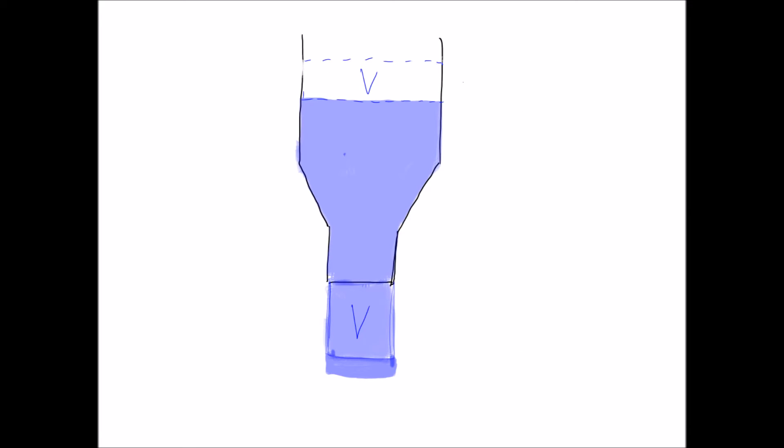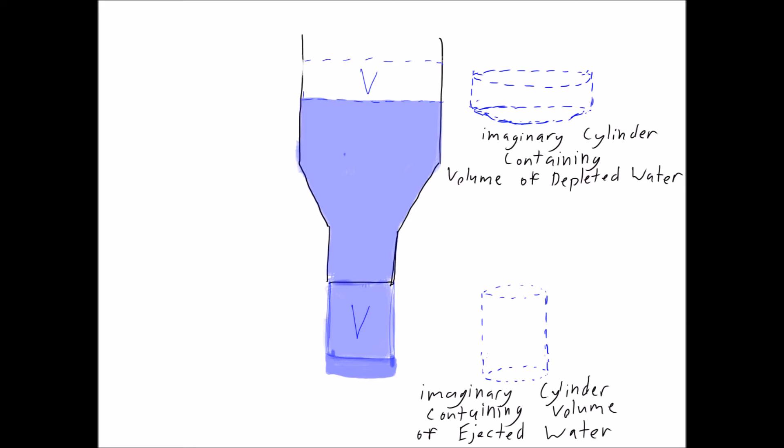Imagine now that the water is pushed out of the pipe. We expect the volume of water that flows out to be equal to the amount of water that's missing from the tank. Imagine the volume is being contained in imaginary cylinders. What you'll notice is that while the volumes are the same, the shapes of these cylinders are a little different.